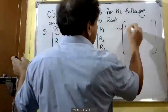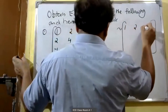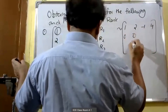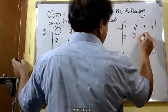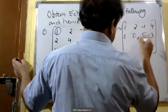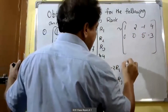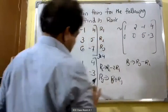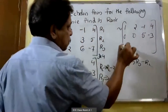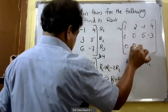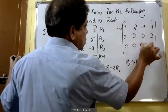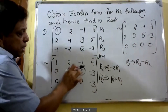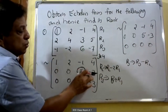After the first step, the matrix looks like: Row 1: 1, 2, minus 1, 4 / Row 2: 0, 0, 5, minus 3 / Row 3: 0, 0, 5, minus 3. Now in the second step, R3 changes to R3 minus R2: 0 minus 0 equals 0, 5 minus 5 equals 0, minus 3 minus minus 3 equals 0.